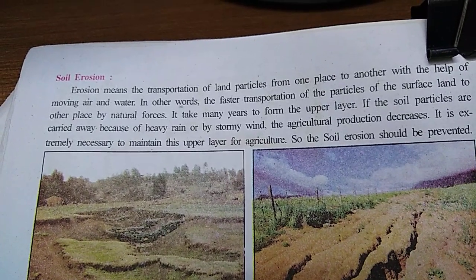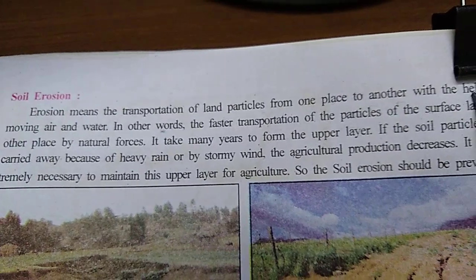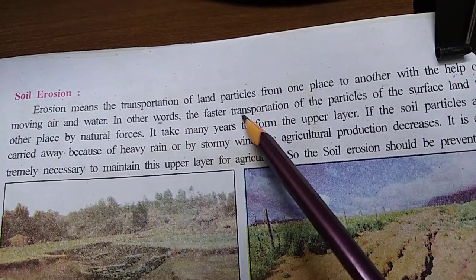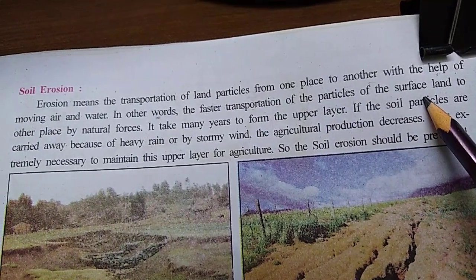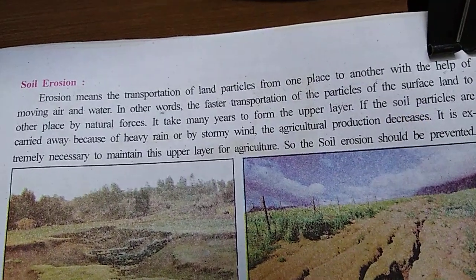Let's observe this with the help of an animation. In this animation you can see that water is flowing, and along with the water the fertile particles also move from one place to another. Water transfers these fertile particles from the land to somewhere else, so that area is eroded. That's why the process is known as soil erosion. In other words, it is the faster transportation of particles of the surface of land to another place by natural force.